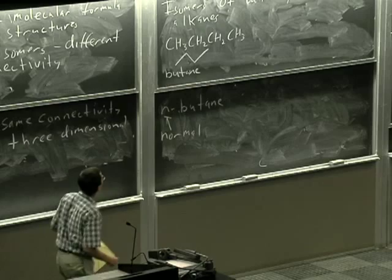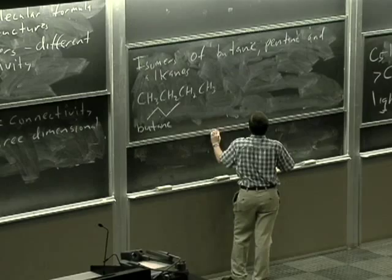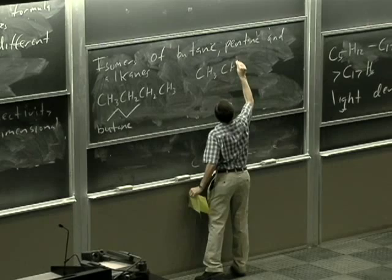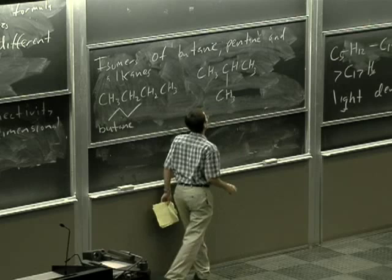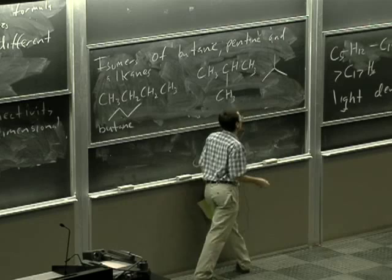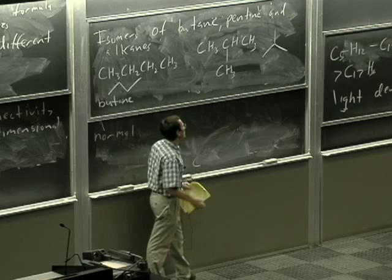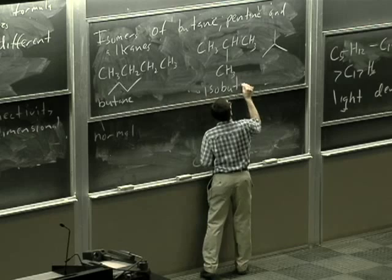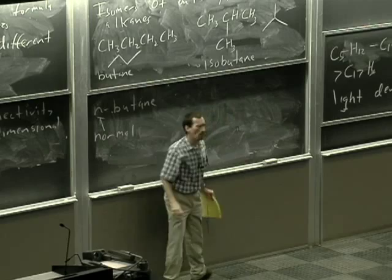For contrast, let me give you the one isomer of butane, CH3CH(CH3)CH3 with a methyl group off of the CH group, off of what we call a methine group. So if I want to write this out in shorthand, I'll just write it like this.